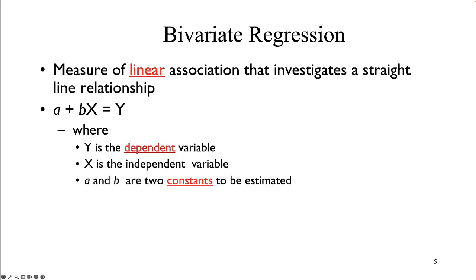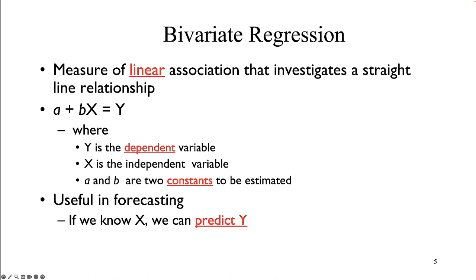With bivariate regression, y is the dependent variable, x is the independent variable, a is the place where the line intersects the y-axis, and b is the slope of the line. By positioning one variable as the IV and the other as the DV, we can accurately predict or forecast the DV with any value of the IV.